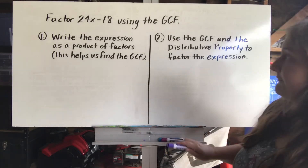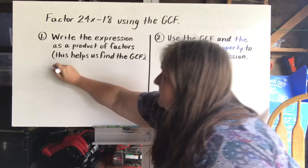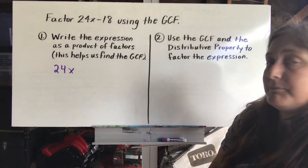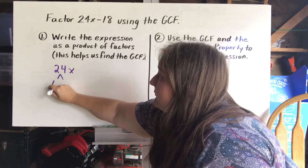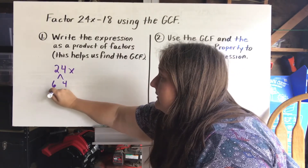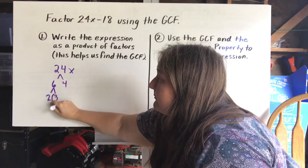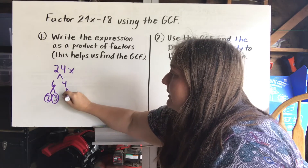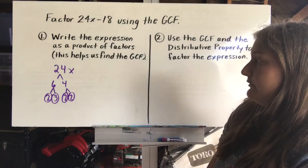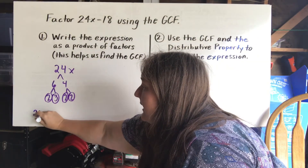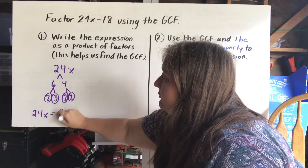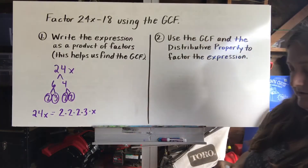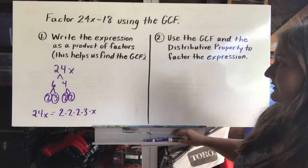So we're going to take our first term, 24x, and find its prime factorization using a factor tree. 6 times 4 gives me 24. 2 times 3 gives me 6, and those are both primes. 2 times 2 gives me 4. So 24x can be rewritten as 2 times 2 times 2 times 3 times x.